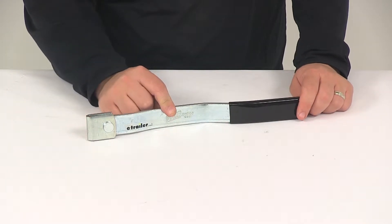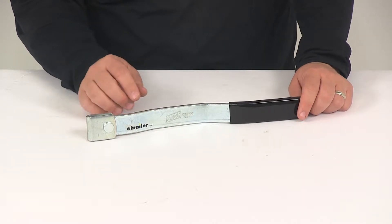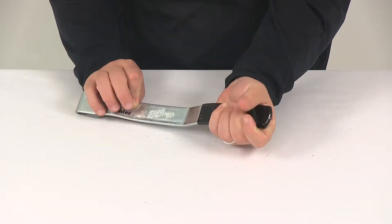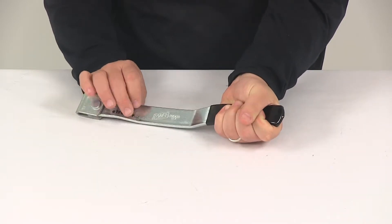This is made from a steel construction with a protective zinc finish, so it's going to be protected from rust and corrosion. On the end it's going to feature a nice rubber grip for easy handling, makes it very easy to operate the handle.